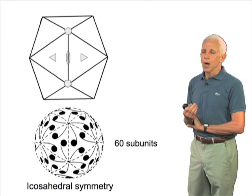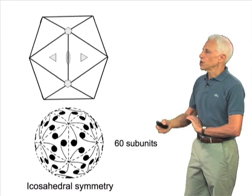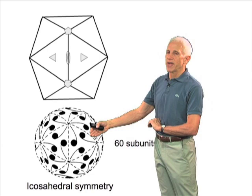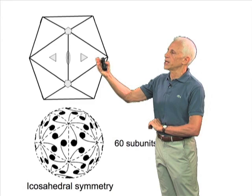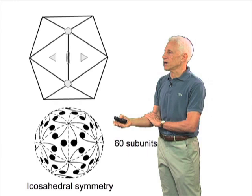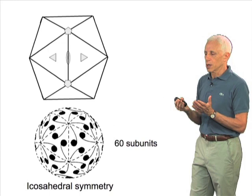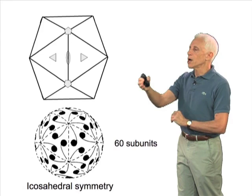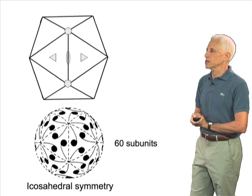And if you place a single asymmetric unit, asymmetric subunit, into a space governed by icosahedral symmetry and then operate on it with the symmetry axes, you get 59 others. That is, there are 60 locations in all that are related to each other by these various symmetry axes, by these various symmetry operations.